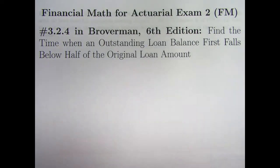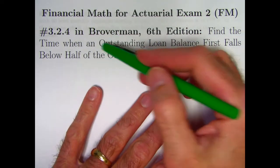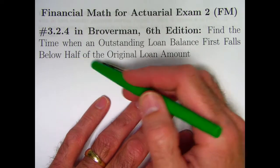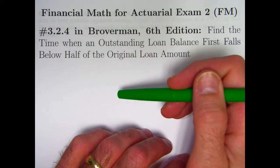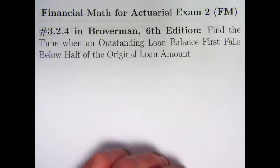This video is about a problem that's not officially an old actuarial exam problem but is of the type that I think it certainly could be. Problem 3.2.4 in Broverman will be finding the time when an outstanding loan balance first falls below half of the original loan amount.